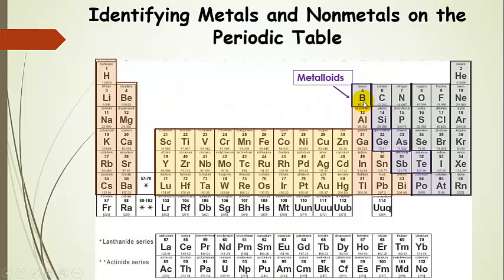And then finally, here are the metalloids. You might see slightly different definitions on different tables, but this is the most common arrangement or identification of metalloids. These are just elements that have properties that are in between metals and nonmetals.